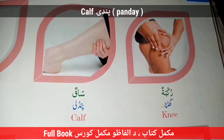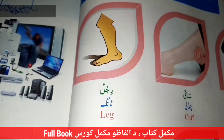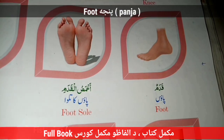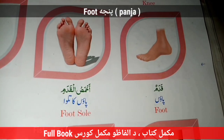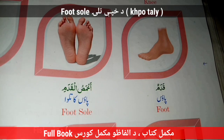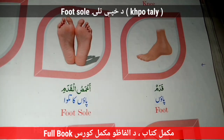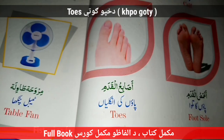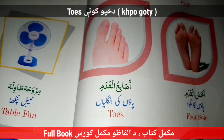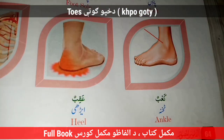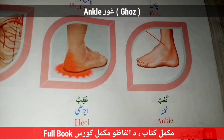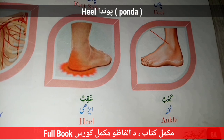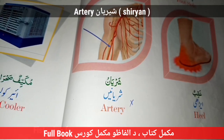Leg — Khpa. Foot — Panja. Foot Soul — Dugpo — Tali. Toe — Toz Dugpo Gota. Ankle — Ghoz. Heel — Punda. Artery — Raguna.